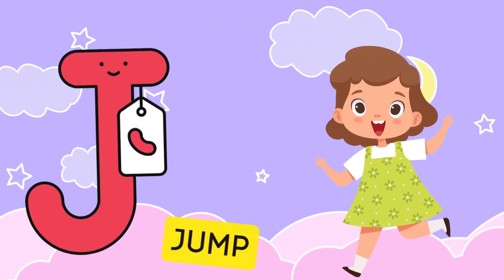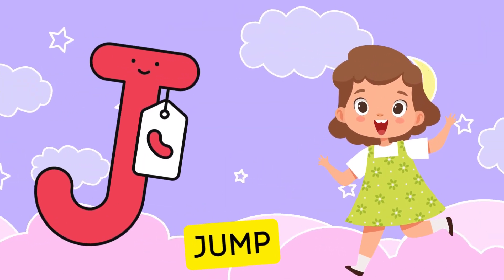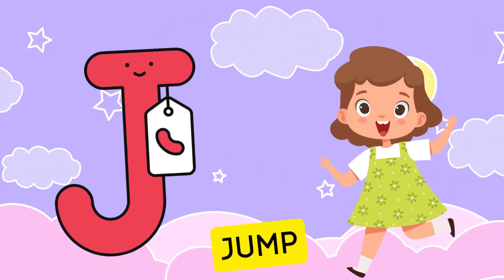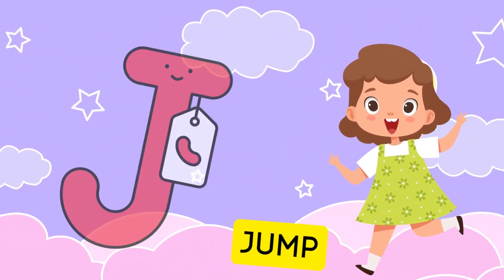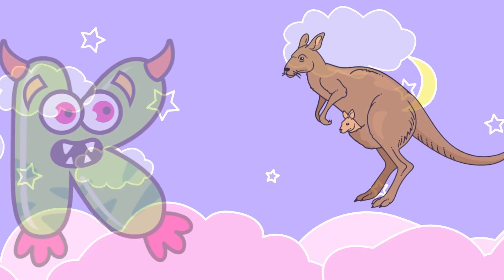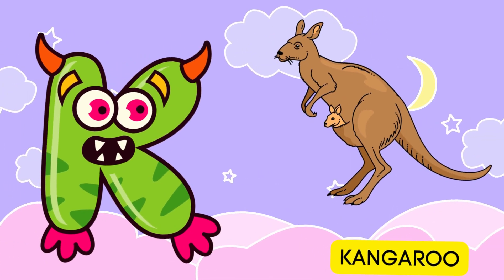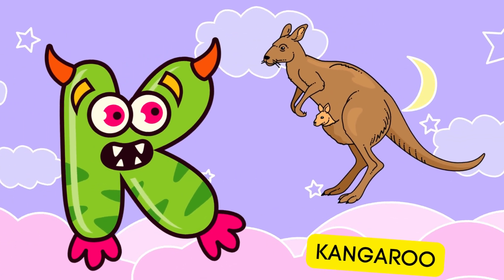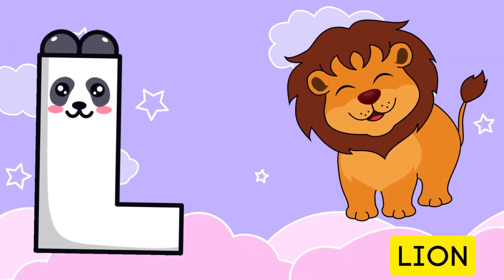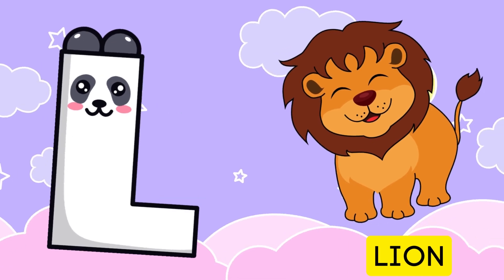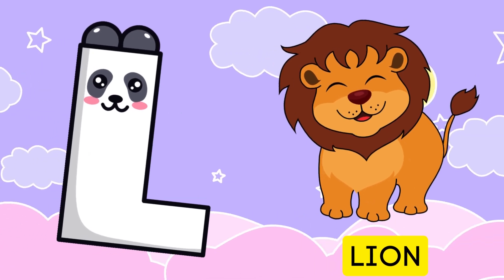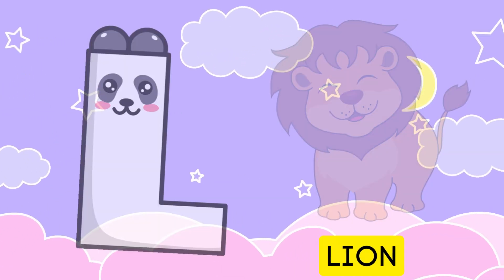J is for jump, j-j-jump. K is for kangaroo, k-k-kangaroo. L is for lion, l-l-lion.